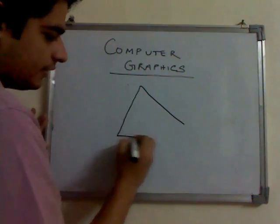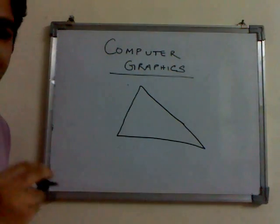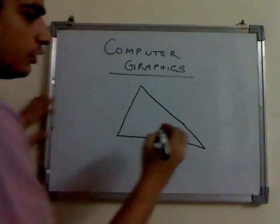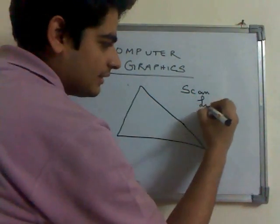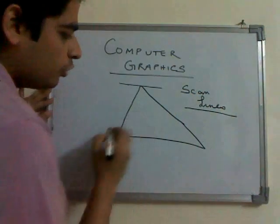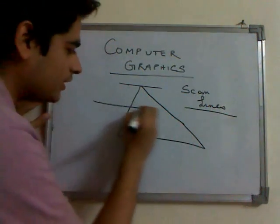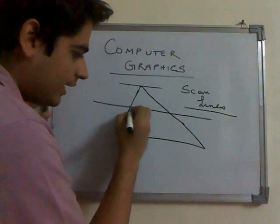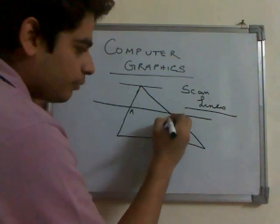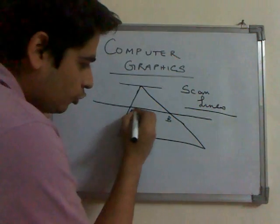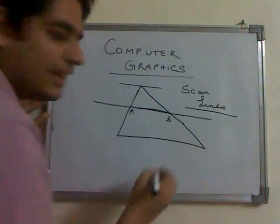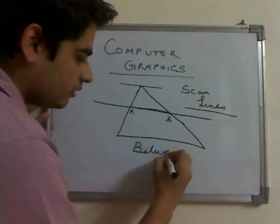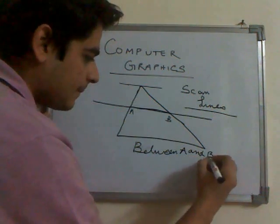Consider this polygon, and consider this has to be filled with a specific color. So how do we proceed about it? We draw scan lines starting from the top to the bottom. We consider a scan line in between. The scan line intersects with the edge of the polygon at point A and with another edge at point B. We make a note of these intersections and then alternatively color it, so all the points between A and B will be colored.